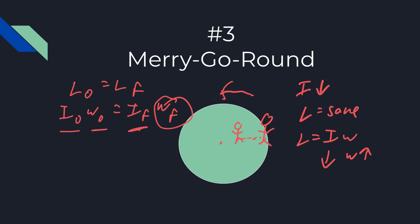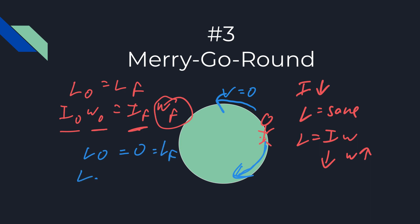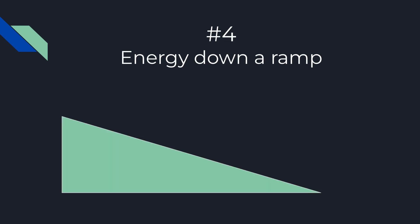The last merry-go-round question: imagine the system starts at rest, so v-initial equals zero. This time the guy starts walking around in a circle — say clockwise — and the merry-go-round has to go in the opposite direction, counterclockwise. This is because initial momentum is zero, so final momentum must also equal zero. The momentum of the guy has to equal the opposite momentum of the merry-go-round, and you solve it similarly to what we just did.